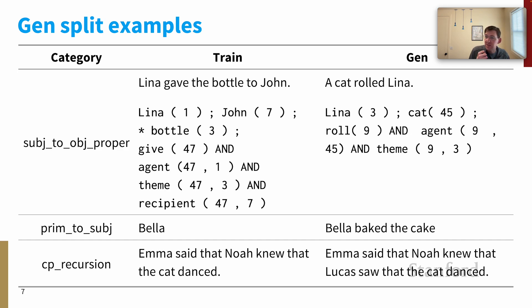CP recursion is a little bit different. This is testing to see whether models can handle novel numbers of embedded sentences. In the train set, you get embeddings like 'Emma said that Noah knew that the cat danced,' and the generalization split simply includes greater depths, like 'Emma said that Noah knew that Lucas saw that the cat danced.'